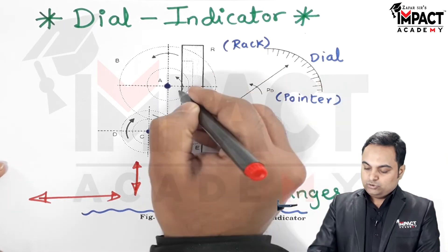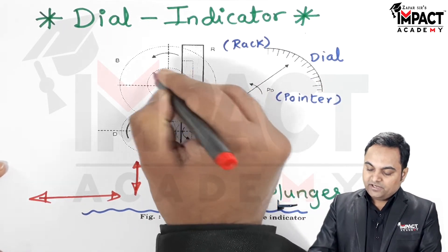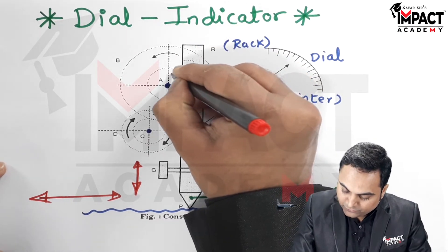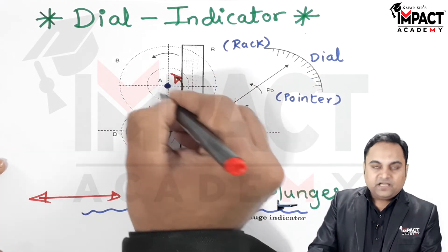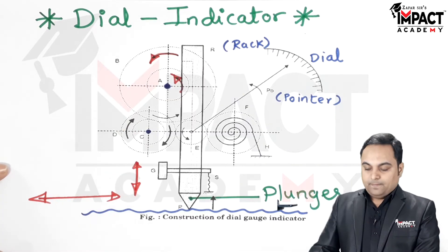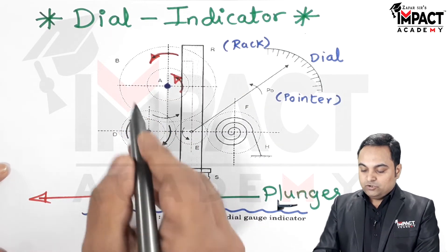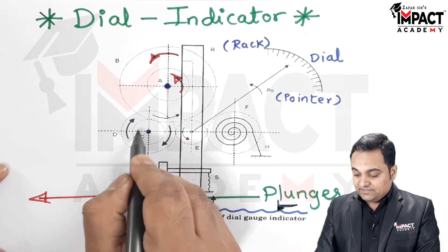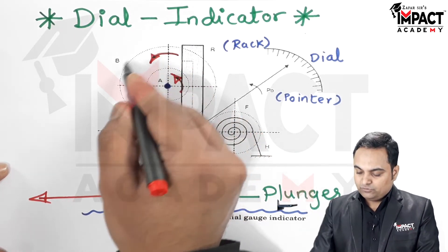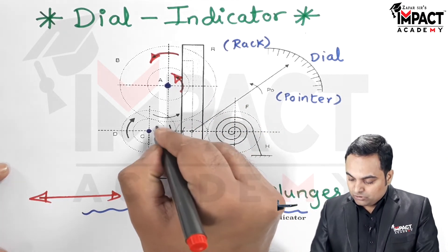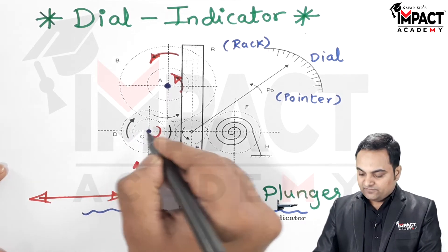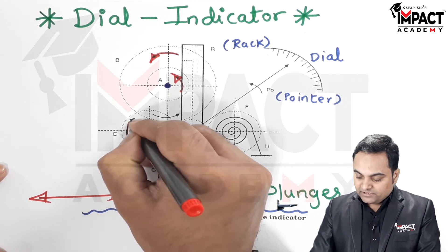Taking an example: if the plunger moves up, the rack inside the plunger is in contact with gear A, so the rack rotates gear A in an anti-clockwise manner. Since A and B are on the same shaft, gear B also rotates anti-clockwise. B is in mesh with C, and since B and C are external gears the direction of rotation is opposite — so when B rotates anti-clockwise, C rotates clockwise.